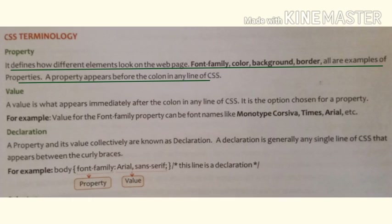A property appears before the colon in any line of CSS. For example, font is one type of element, and what we use with font includes font family, font color, font background, and border.